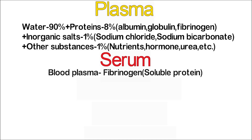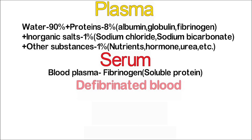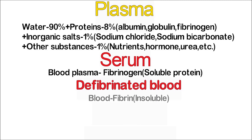Fibrinogen is the soluble plasma protein. Defibrinated blood is blood minus fibrin — fibrin being the insoluble plasma protein that is removed from the blood.